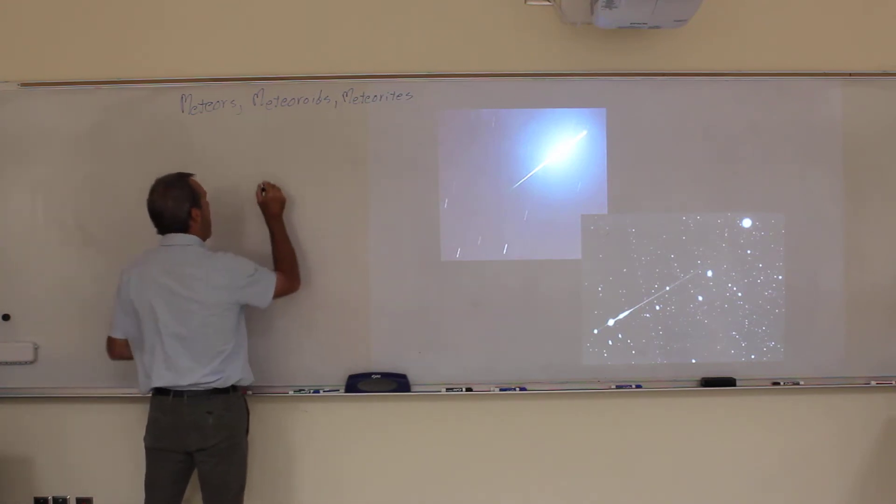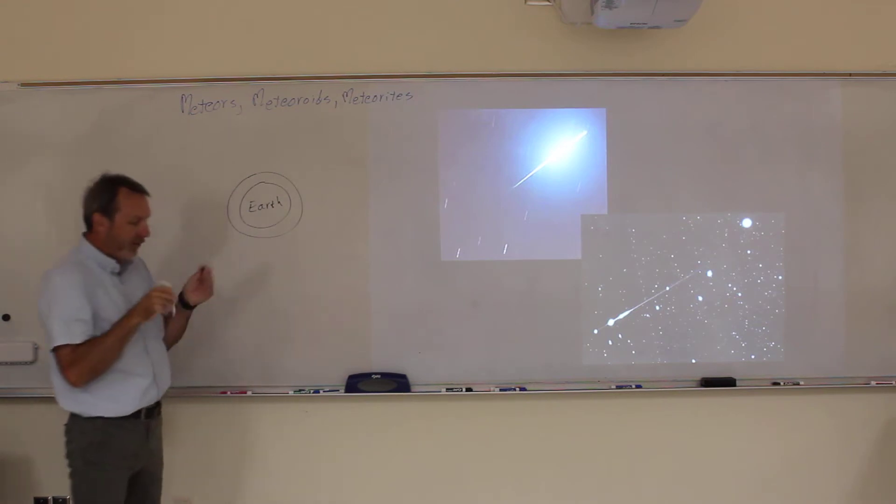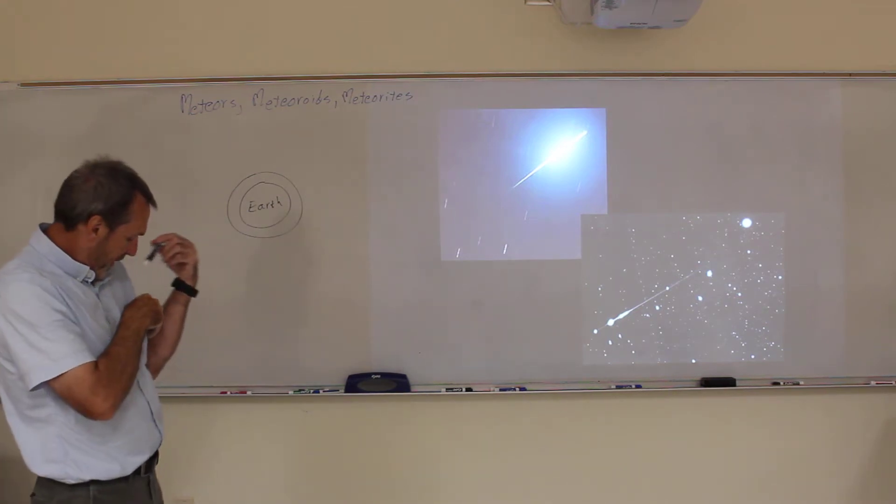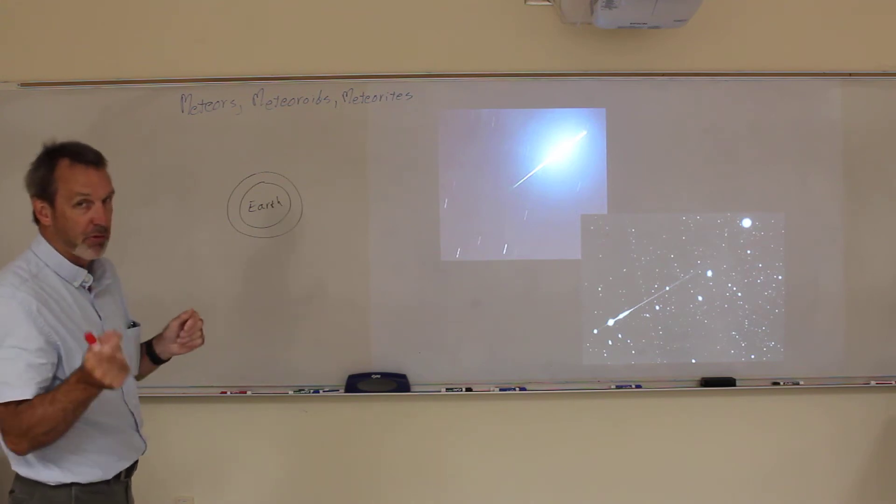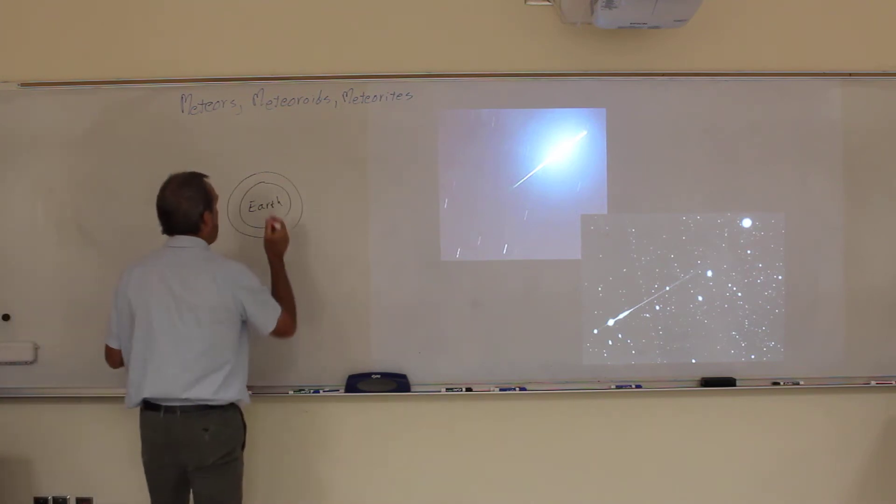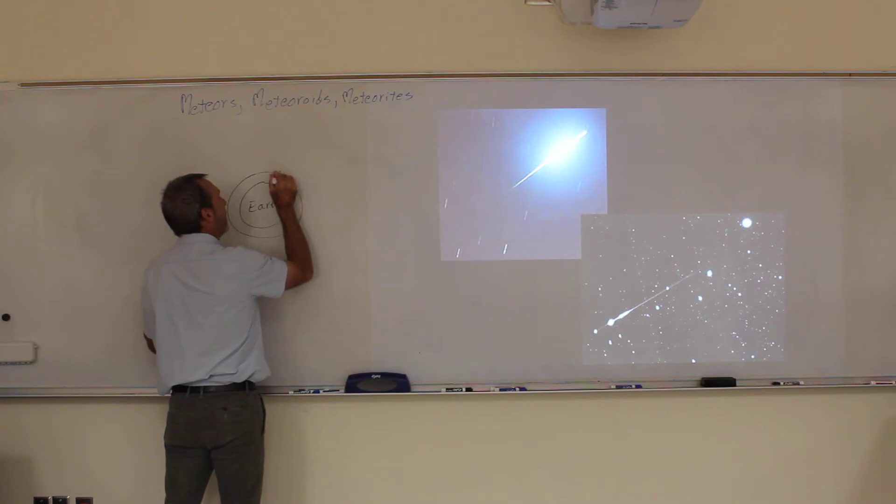And what happens is, here's the Earth, here's our atmosphere, remember, not drawn to scale. In space, there's all kinds of tiny pieces. Think of it like pieces of sand grain, most of them are actually quite small. Well when that sand grain enters the atmosphere, all these pieces that are floating out in space, we call them meteoroids.